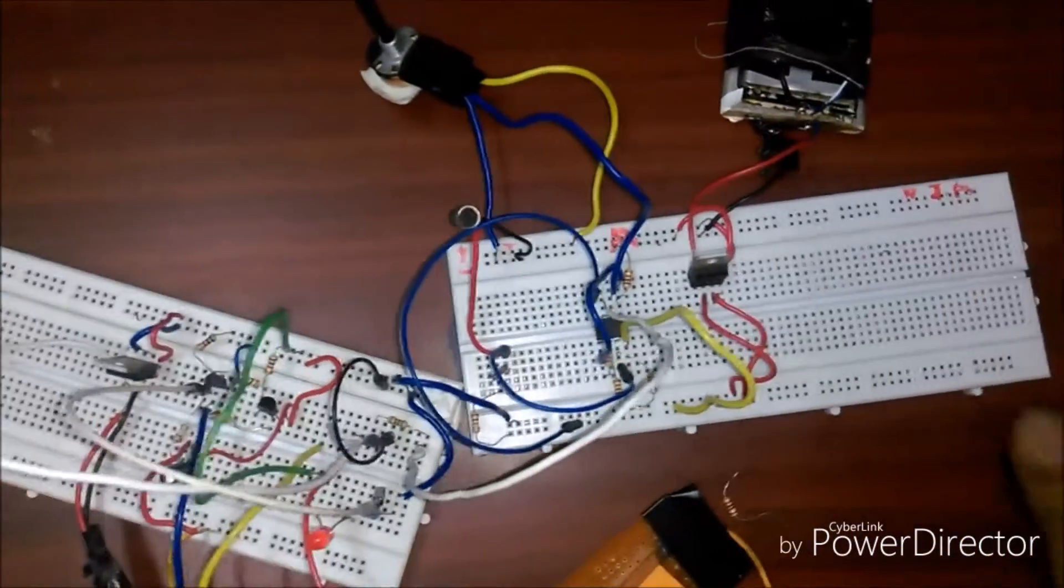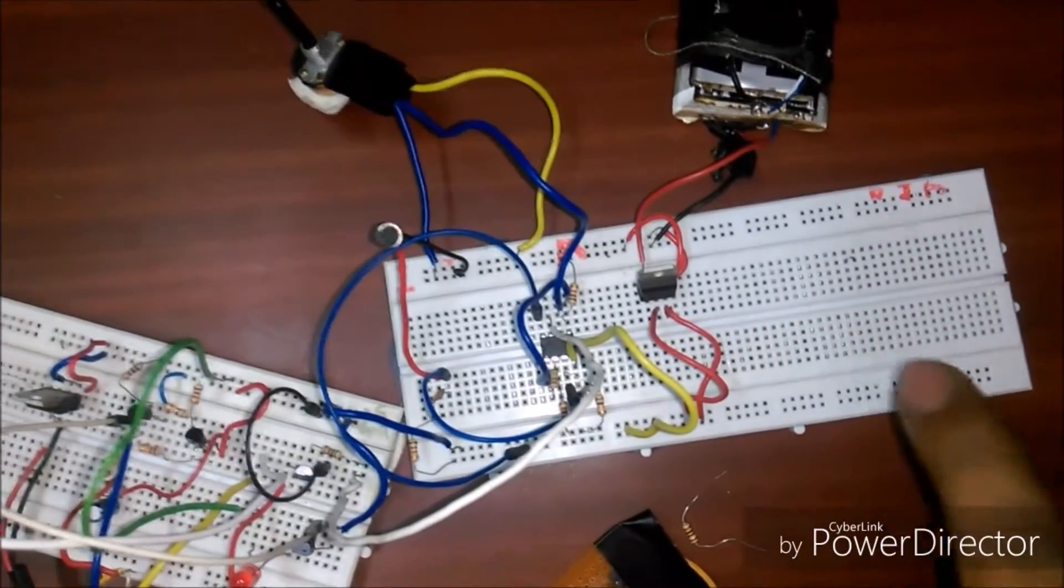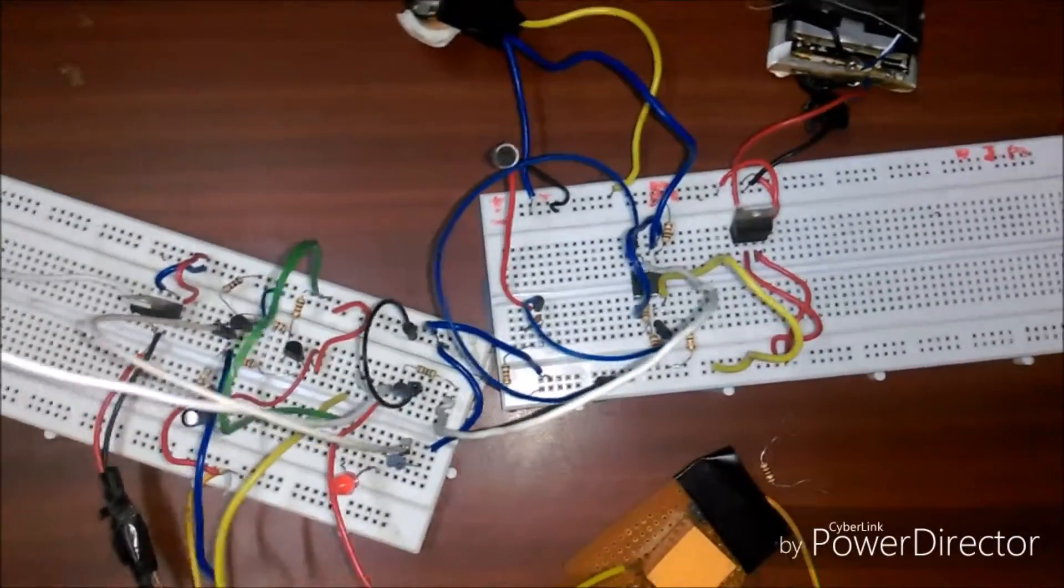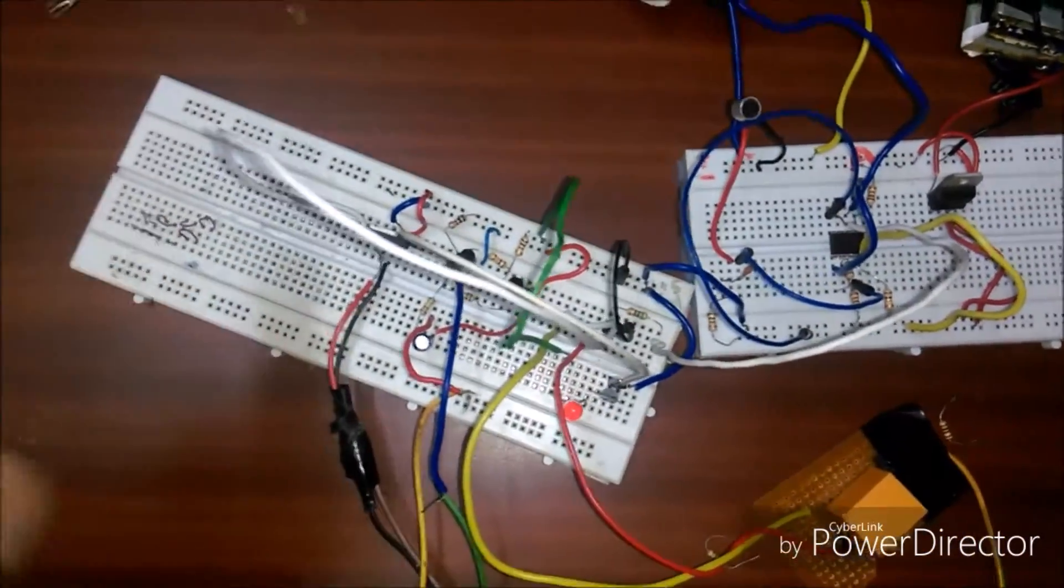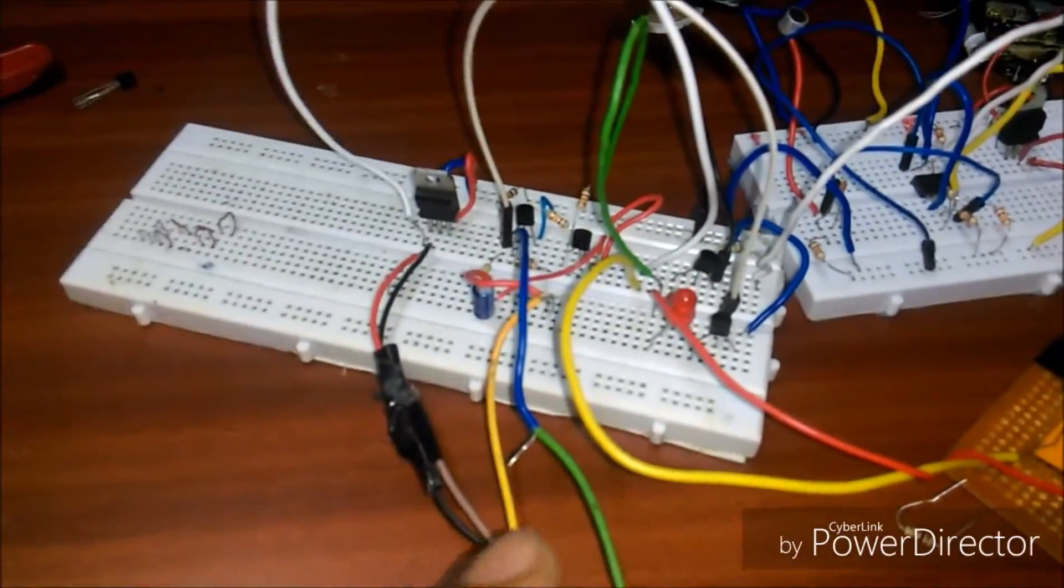This one is a sensor that senses clapping sound and converts it into a pulse, and then the pulse is sent to this toggle switch. This toggle switch will switch from one setting to another setting depending on its current setting. As you can see...